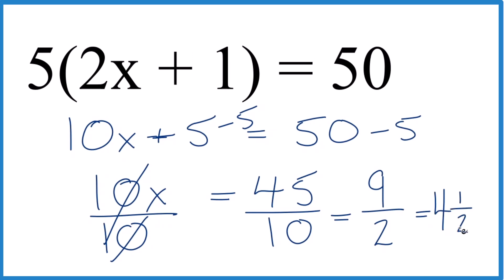And we could check that. 4 times 2 is 8. 8 plus 1, that's the 9. Keep the denominator the same. So that's how you solve for x here. And 5 times the quantity 2x plus 1 equals 50. Hope this helped. Thanks for watching.